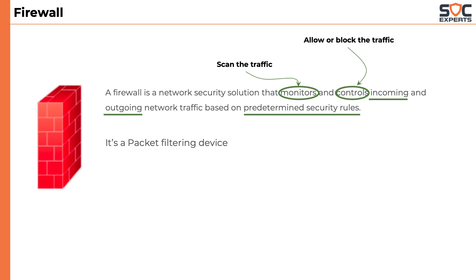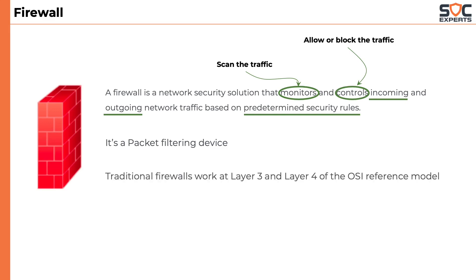A firewall is a packet filtering device — it scans each and every single packet passing through it. A traditional firewall works at layer 3 and layer 4 of the OSI reference model. The reason I mentioned traditional is because there is another set of firewalls called next generation firewalls, which you will be learning about in the future.